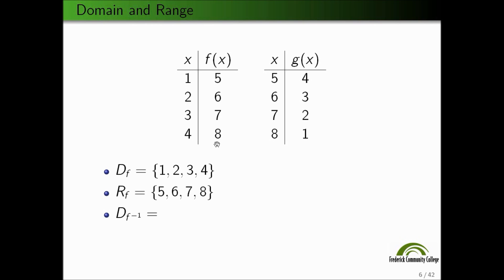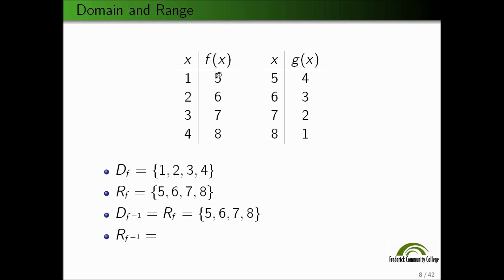The domain of the inverse function is simply going to be — the inverse maps the outputs back to the inputs of the original function. So it's simply going to be the range of the original function f, which is 5, 6, 7, 8. The range of the inverse function — the inverse will take the outputs of the original function f and send them back. So it's going to be the domain of your original function f, which is 1, 2, 3, 4.